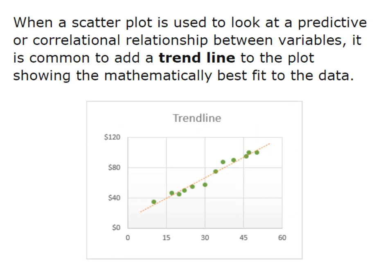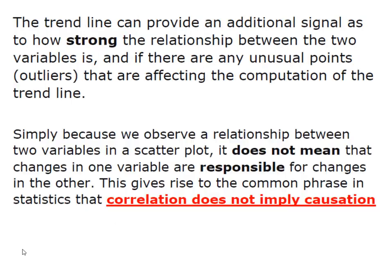When we use the scatter plot to look at some kind of predictive or correlational relationship between the variables, what we add to the plot is this trend line. This trend line is simply the mathematical equation that shows the best fit to the data. Although we may use that trend line to provide an additional signal in terms of how strong the relationship between the two variables is, it also allows us to identify potentially unusual points or outliers that may be affecting our computation of that trend line.